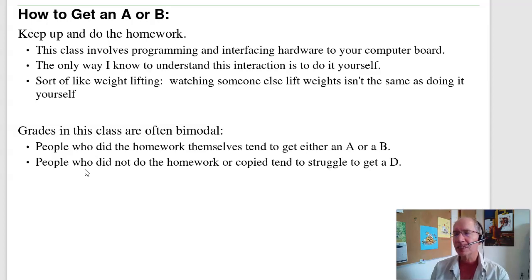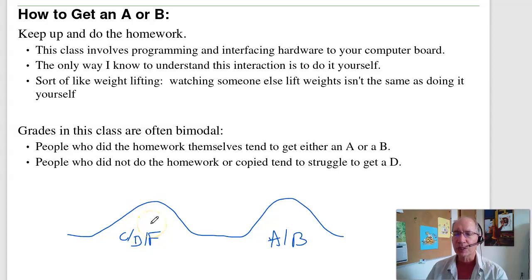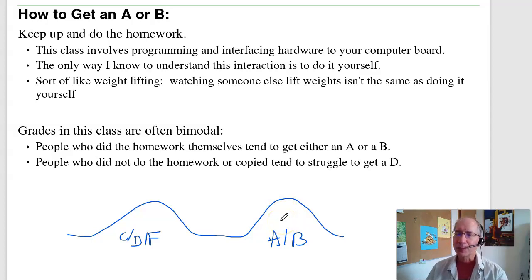Oftentimes the grades in this class are bimodal. The class average typically splits into two groups: the A's and B's are the people that did the homework and know what they're doing, and the C's, D's, and F's are the people that did not do the homework — or they're in a group and gave moral support to others. Come test time, they have no idea what's going on. Do the homework, and the test should be pretty easy. If you did the homework, you understand the code, how to write code, for loops, do loops — you don't want to learn the material on the test.